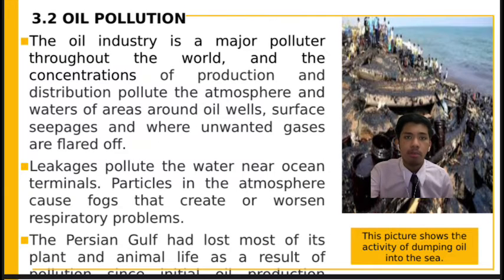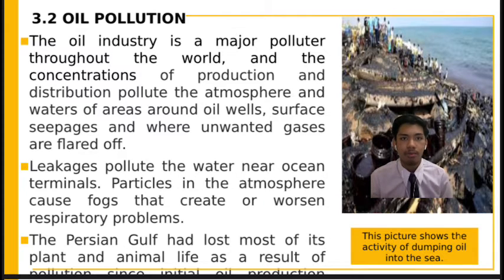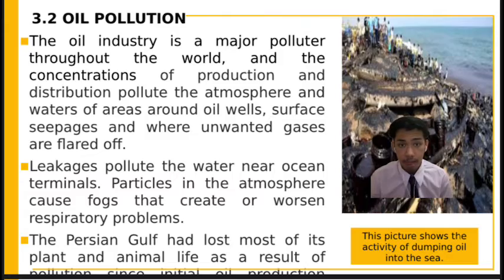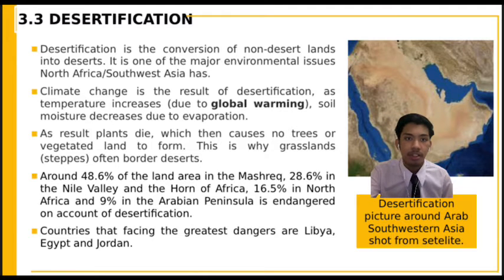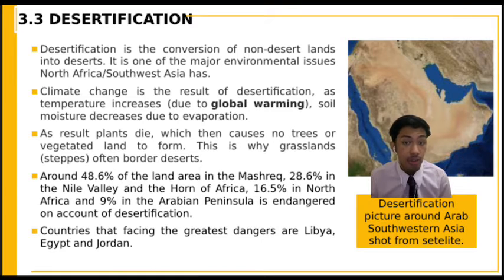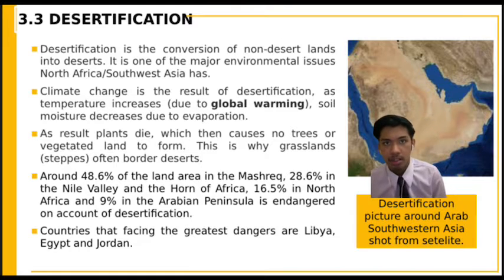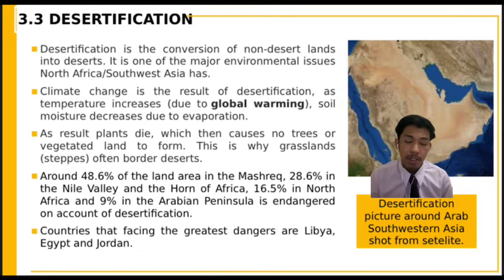Next is the oil pollution problem. The oil industry has become a major polluter throughout the world, and this region cannot escape that. For example, the Persian Gulf has lost most of its plant and animal life as a result of oil pollution. Lastly, for environmental problems, there is desertification, which means the conversion of non-desert land into desert. It is one of the major environmental issues in North Africa and Southwest Asia.